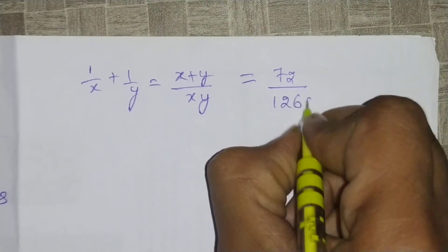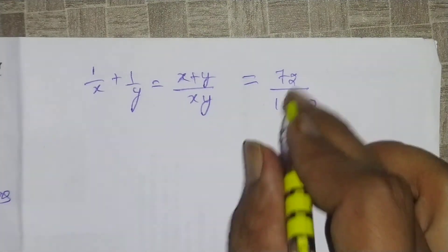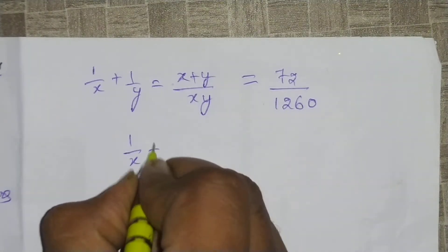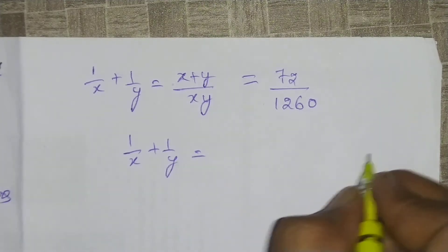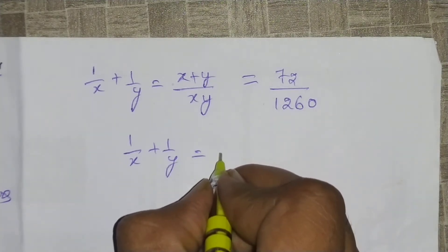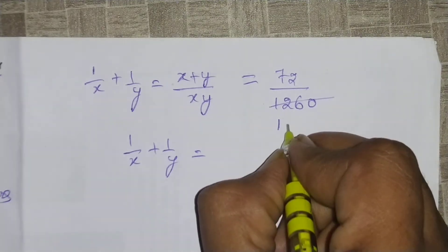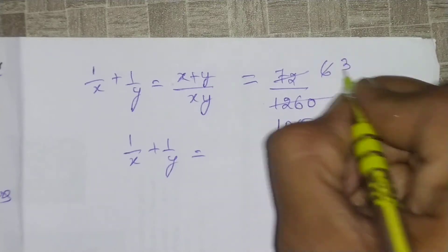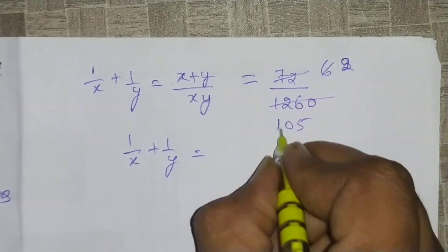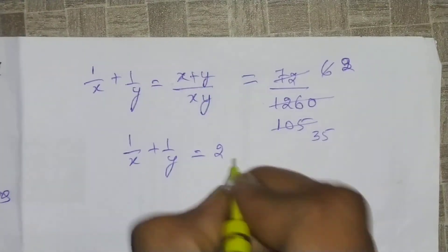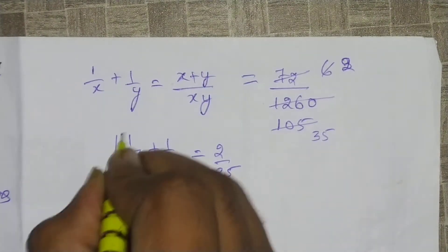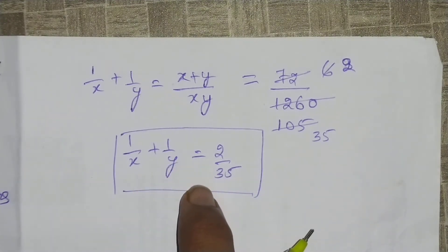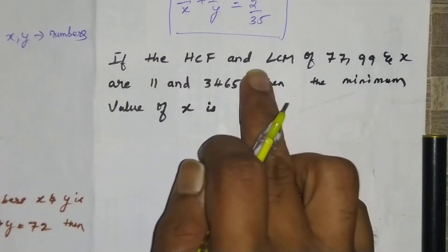For x plus y we get the value 72 from the given data. For xy we get 1260. So 1/x plus 1/y equals 72 divided by 1260. Dividing both by 12, we get the answer as 6 divided by 105, which simplifies to 2 divided by 35.